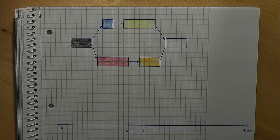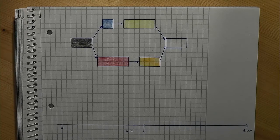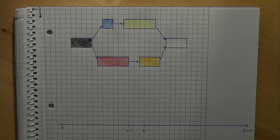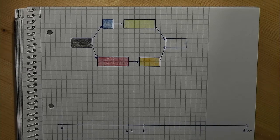Let's use Legos to illustrate the situation. Scheduling means to position the jobs along a timeline. A feasible schedule, that is, a schedule that takes into account the precedence constraints, could look like this.